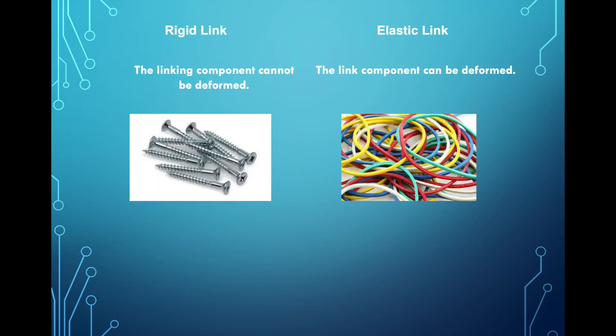Then we have rigid versus elastic. We're talking about the link itself. So let's say we take a look at screws. Well, screws are not exactly mush, right? So they're rigid. These cannot be deformed. And elastic can be deformed. So this is an example of an elastic link. So anything made of rubber or a very soft type of link, that would be elastic.